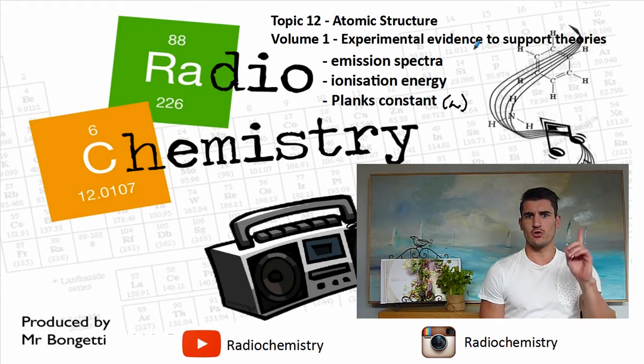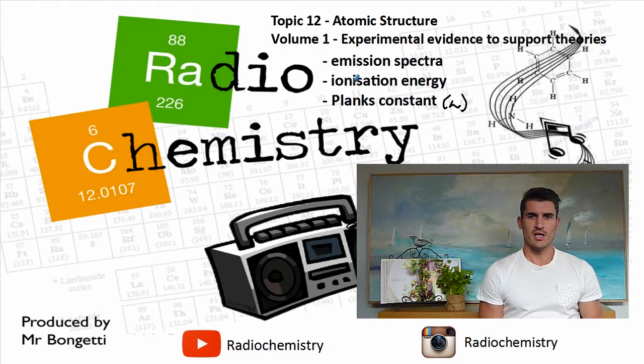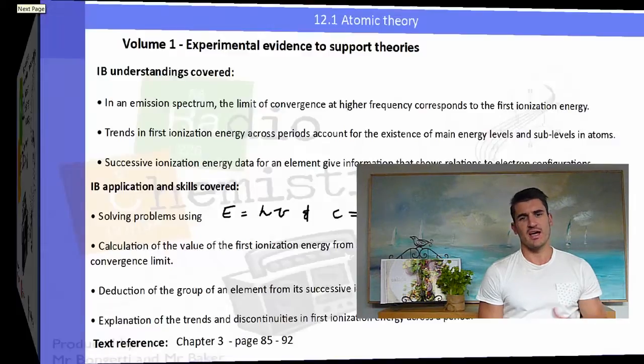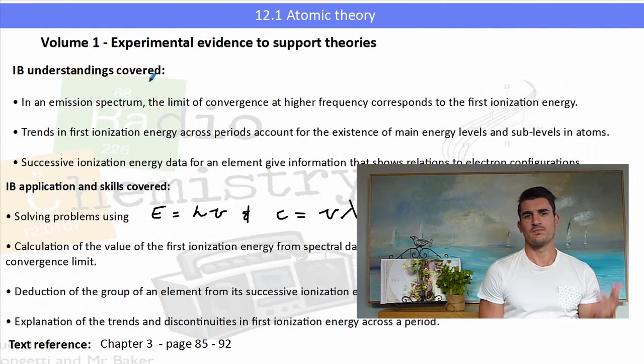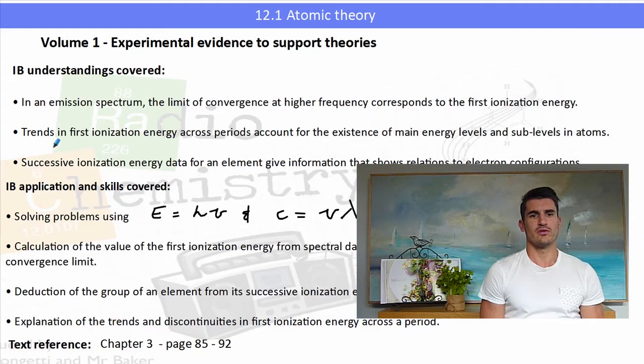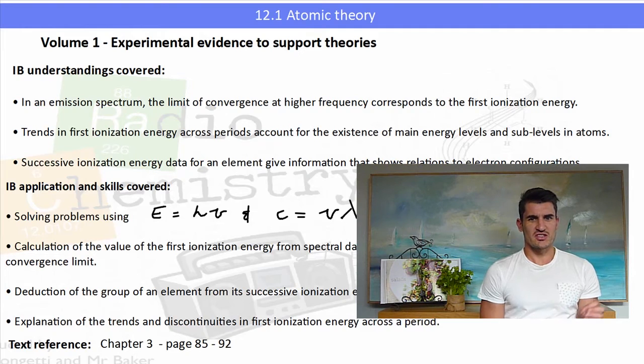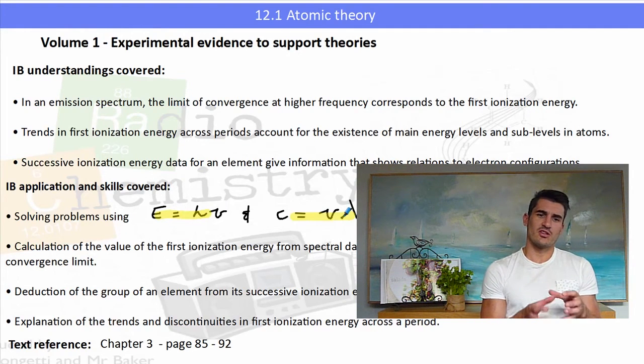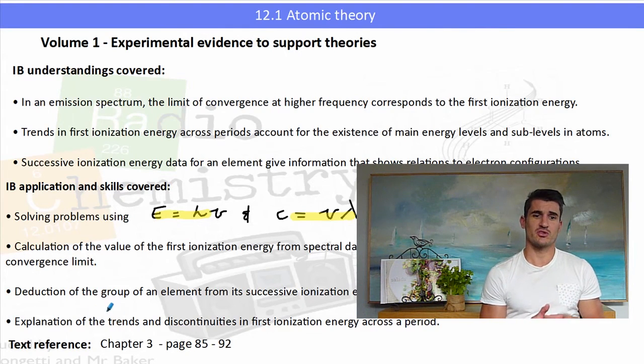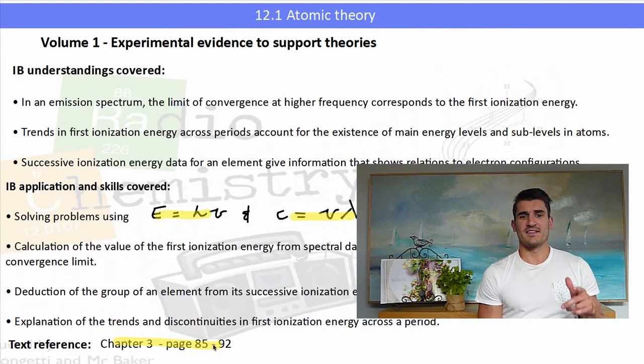Topic 12 Atomic Structure, Volume 1, the one and only. We look at experimental evidence to support some theories of emission spectra, ionization energy, and we discuss Planck's constant. The IB understandings covered for the higher level Topic 12 talk about emission spectra and convergence, ionization energies, and we try and use some of the knowledge that we have to work them out. We also look at two equations which can be found in the data book and the text reference is page 85 to 92.